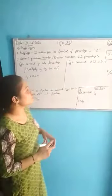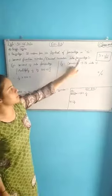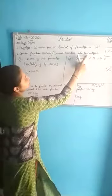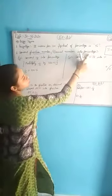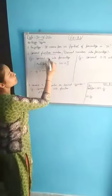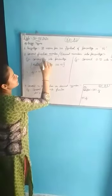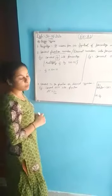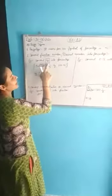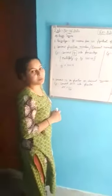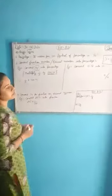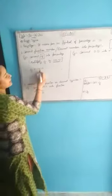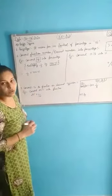Now the next topic is: convert a fraction number or decimal number into percentage. How can we convert a fraction number into percentage, or a decimal number into percentage? We can convert any fraction number into percentage by multiplying it by 100 percent. That means to convert any fraction number, we have to multiply it by 100 percent.